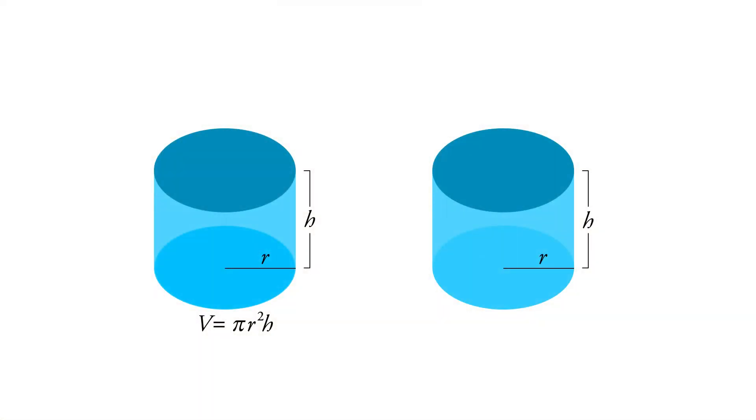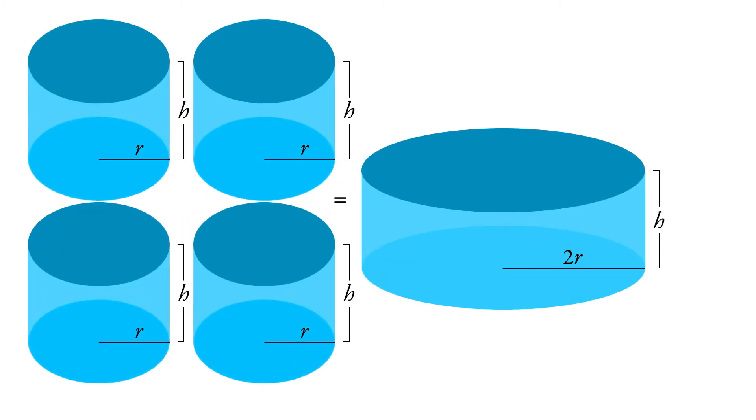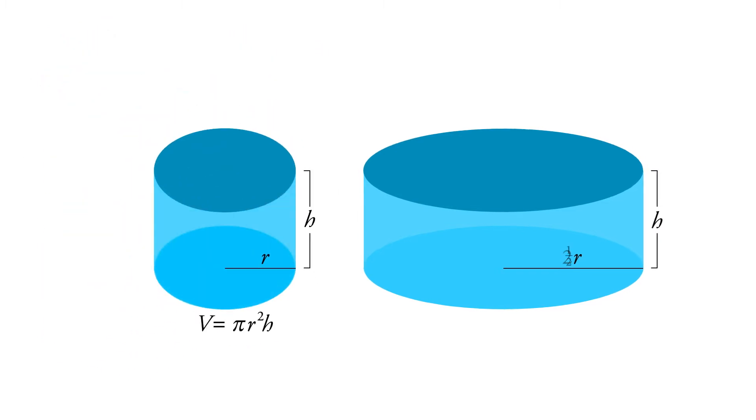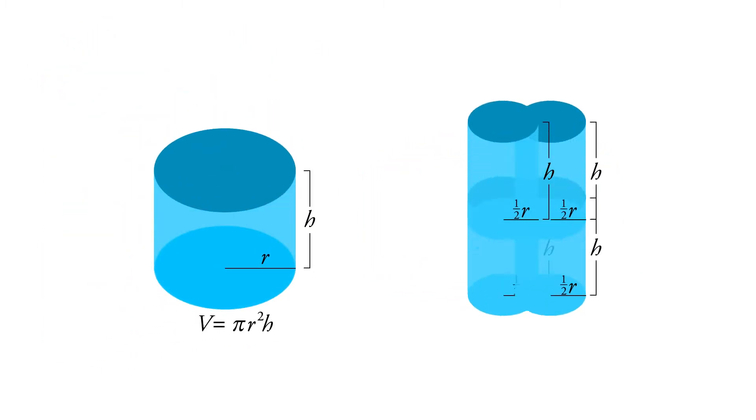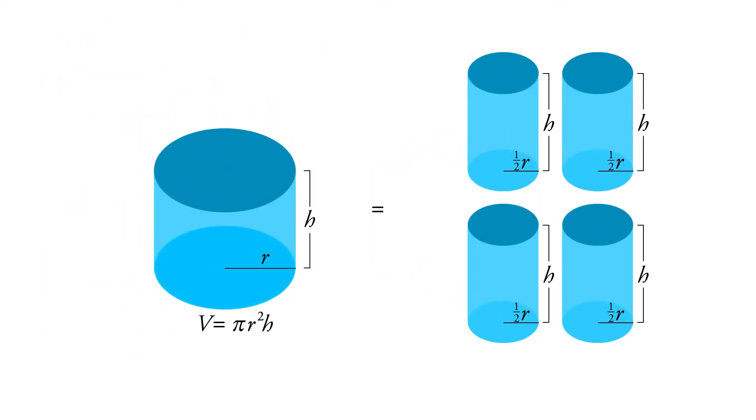And that's because every time we double the radius of a cylinder, we have increased its volume by four. And every time we halve the radius, we've decreased its volume to a point where it's one-quarter of the original.